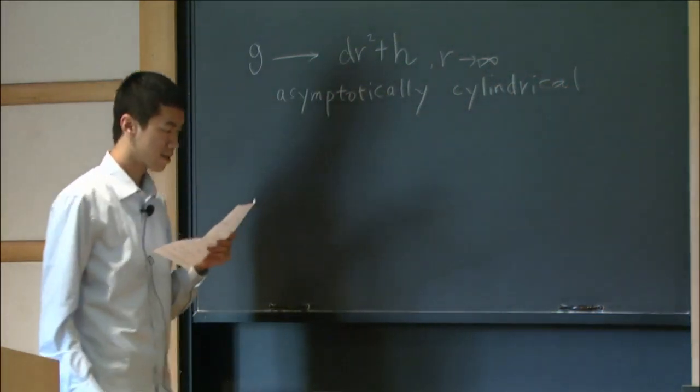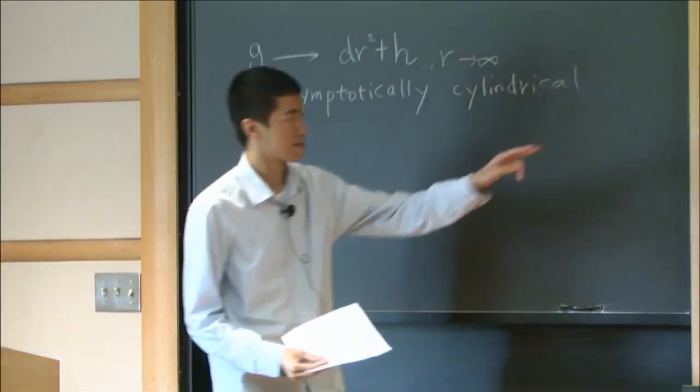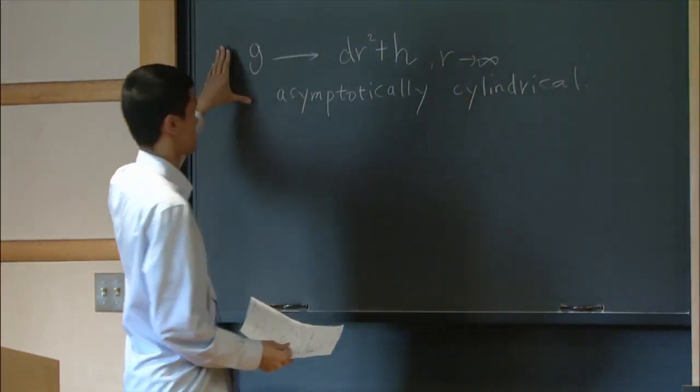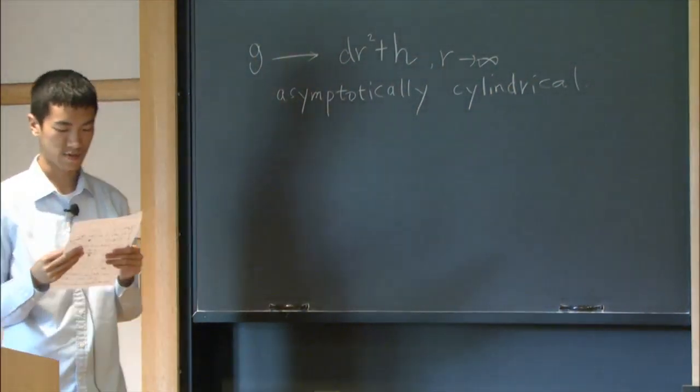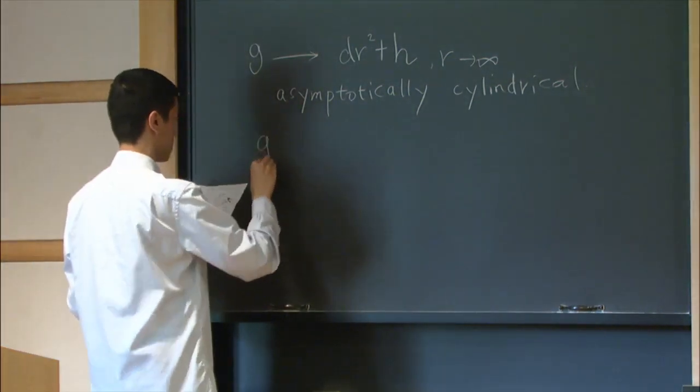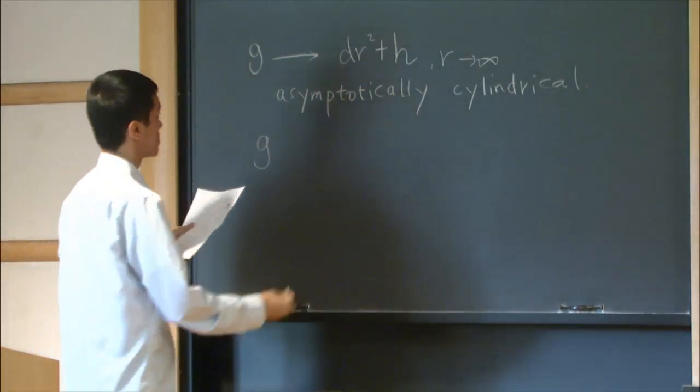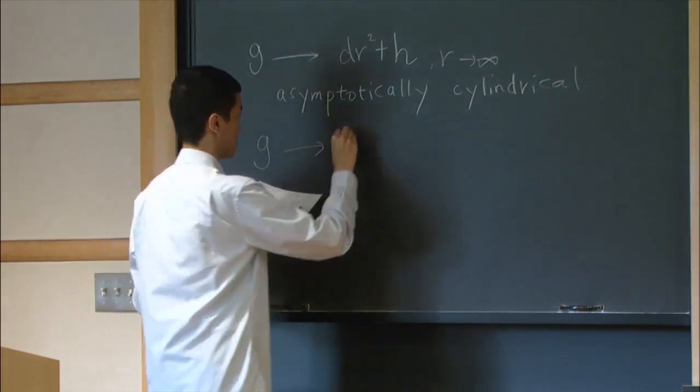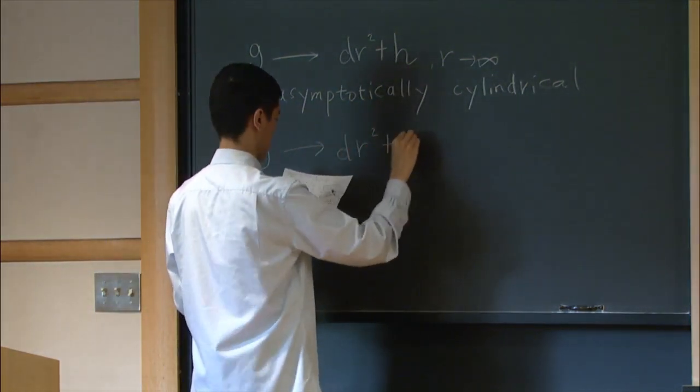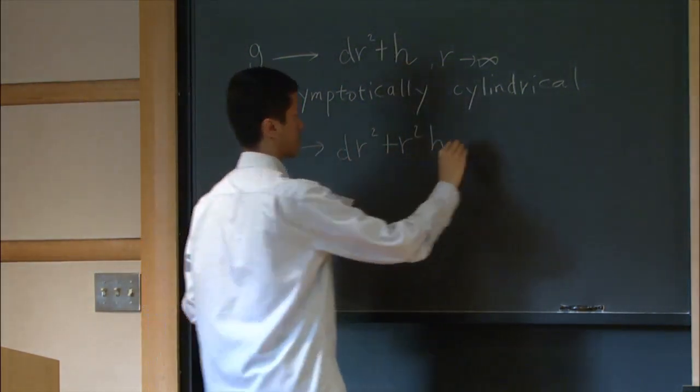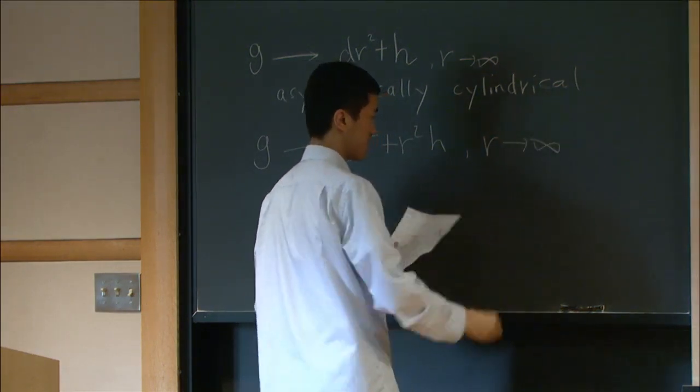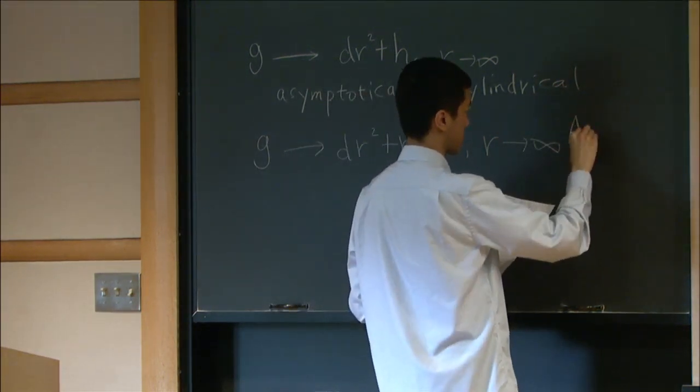And we can apply this estimate to asymptotically cylindrical manifolds. The other typical thing in which you can apply this method: you can either let R go to infinity, which is called asymptotically conical.